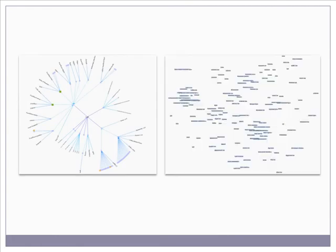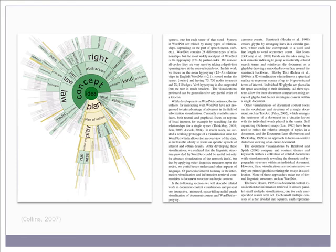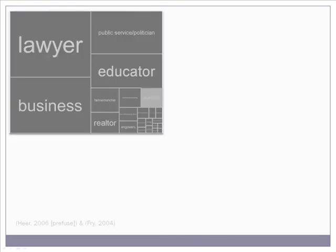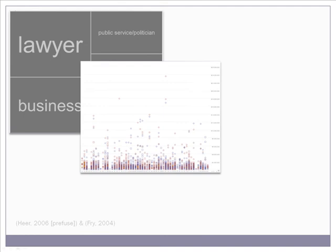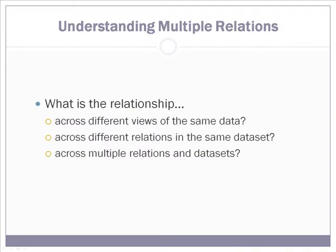When exploring data, we often use more than one representation. We may also look at a visualization of data alongside the original source, or look at different visualizations of different datasets and compare amongst them. The question that the VisLink visualization attempts to answer is: what are the relationships across different views of the same data, across different relationships in the same dataset, and across multiple relationships and multiple datasets?